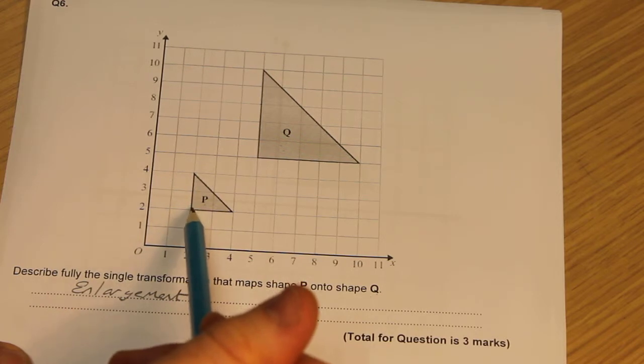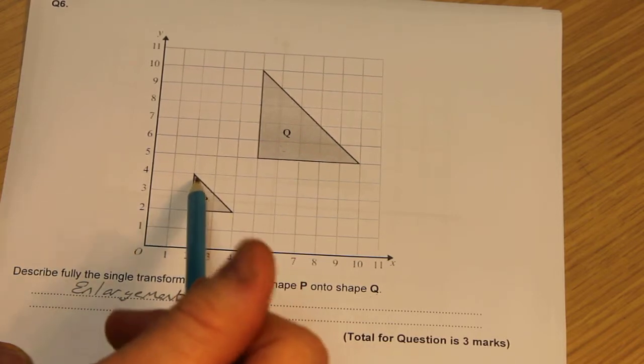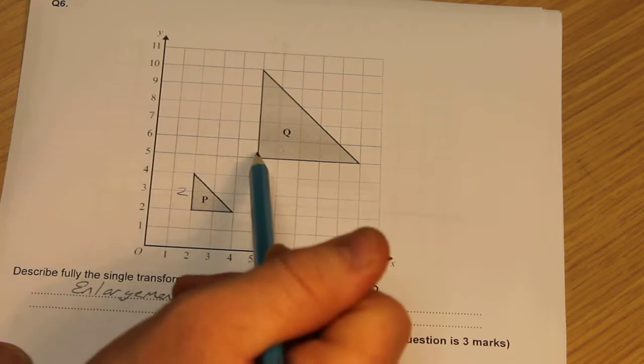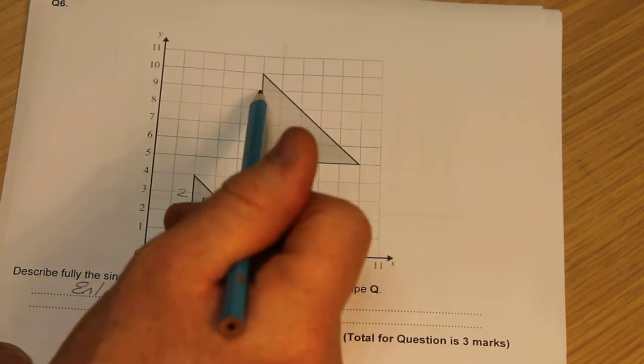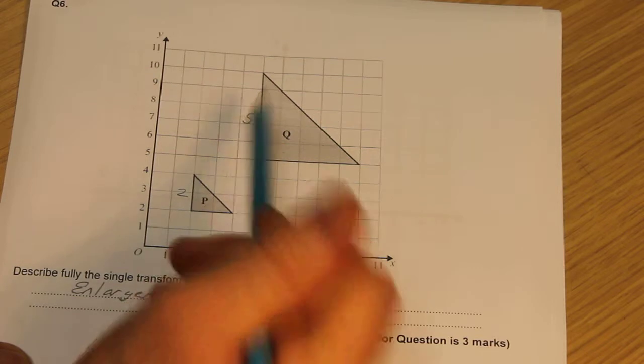How many times bigger has it got? Well, I look at one of the sides. That's 2 squares, and that side is—sorry, it's actually 5 squares long.